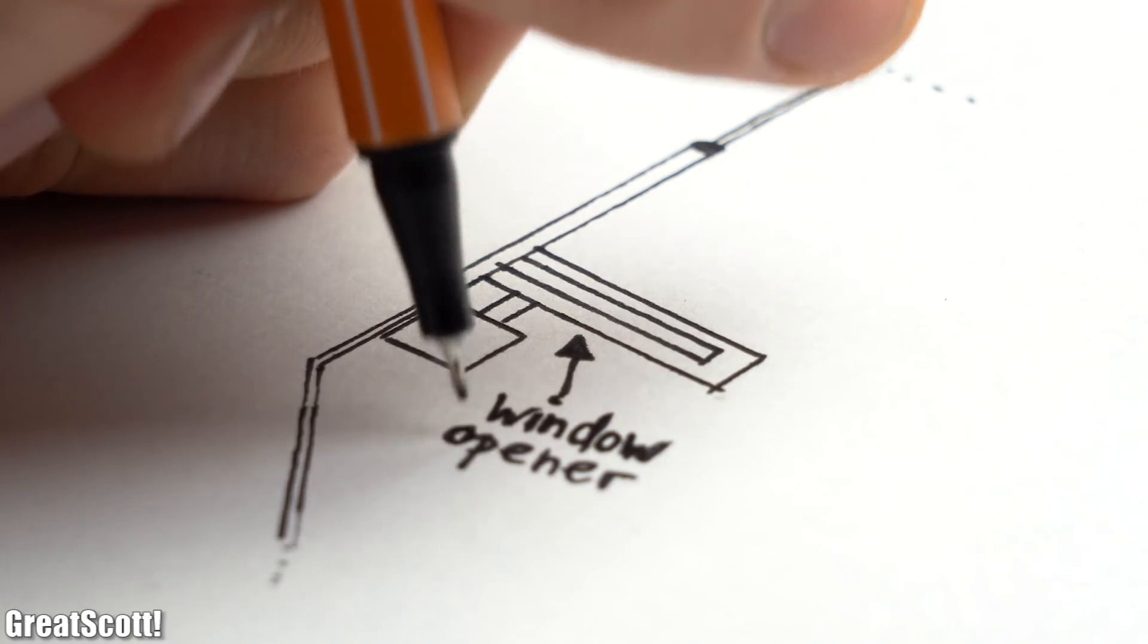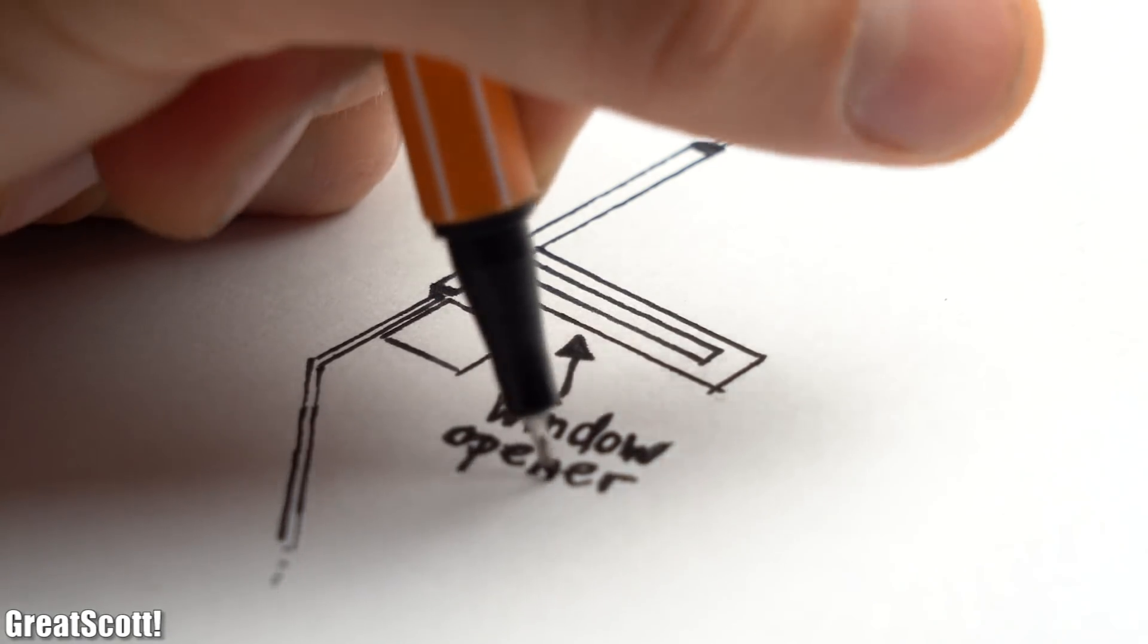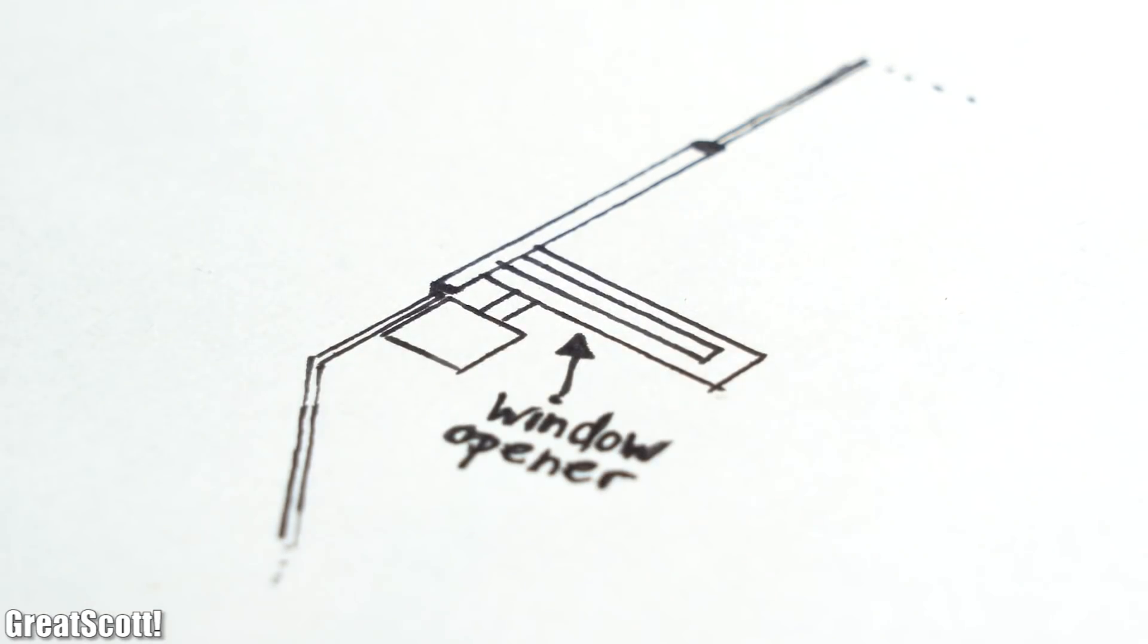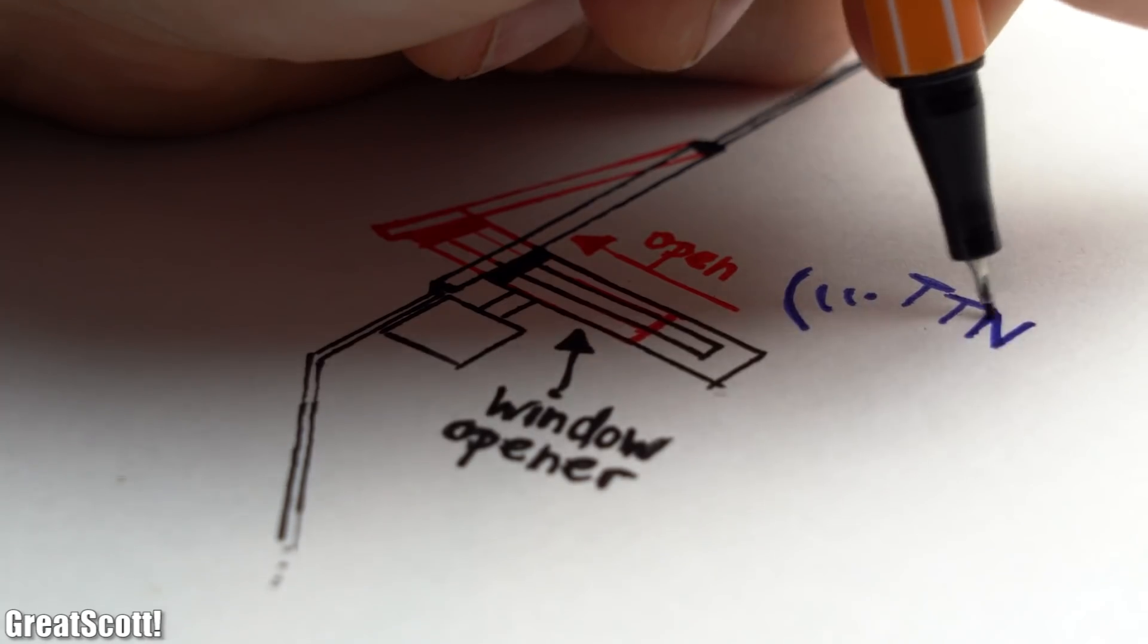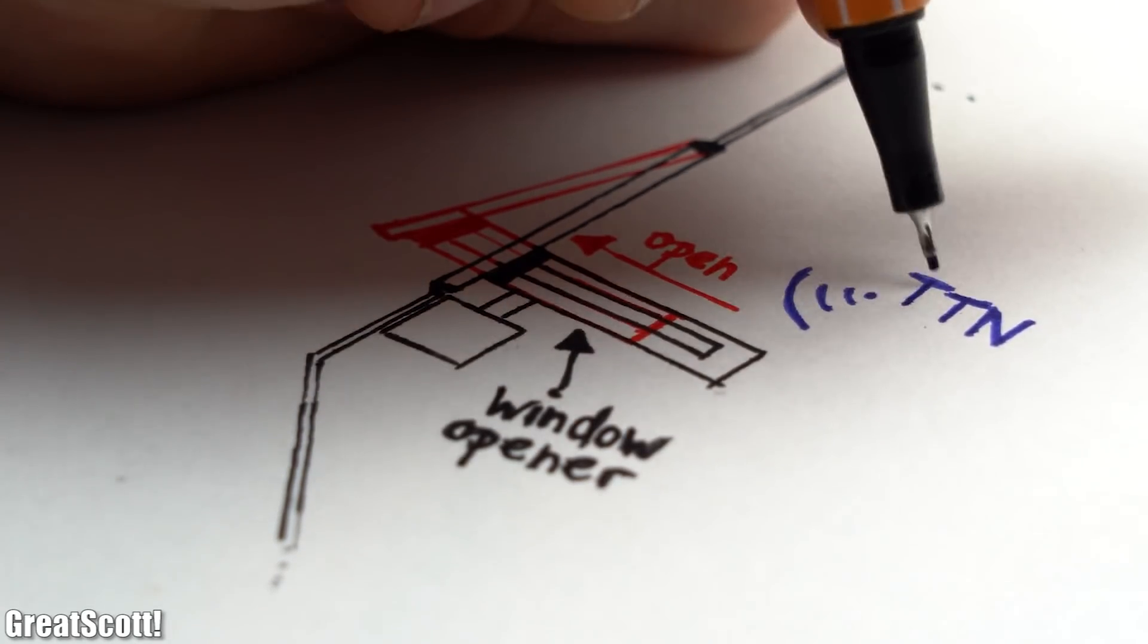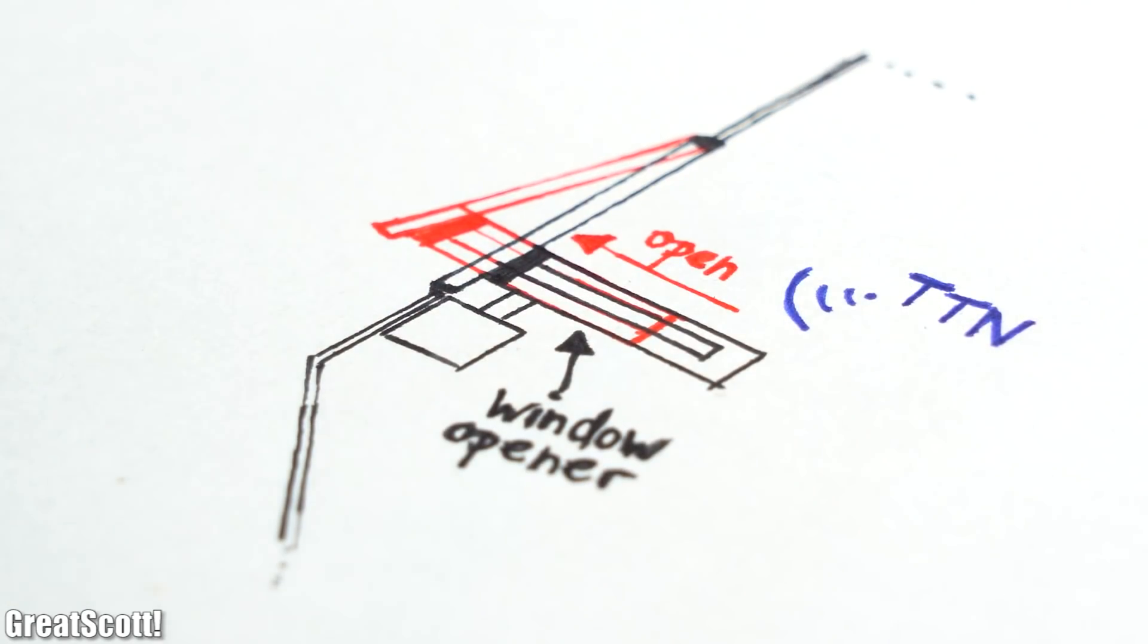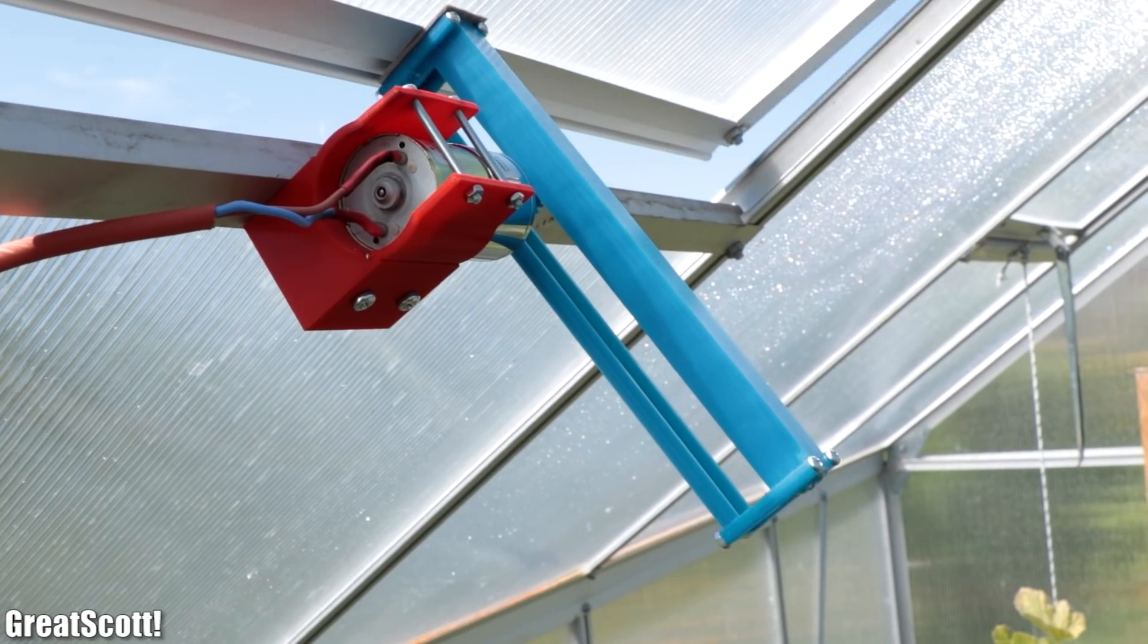But wouldn't it be awesome to have an automated motorized window opener which like the name implies opens and closes the window whenever I tell it to do so through the things network site. Well, in this video I will show you how to do just that. So, let's not waste any more time and let's get started!